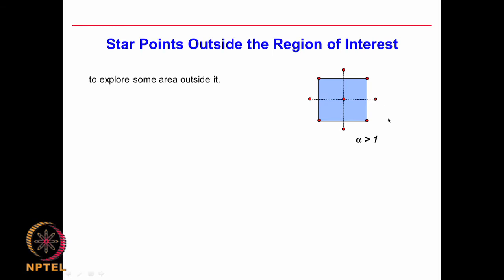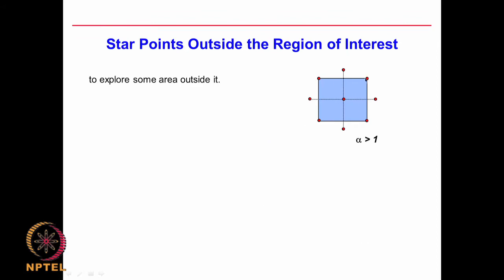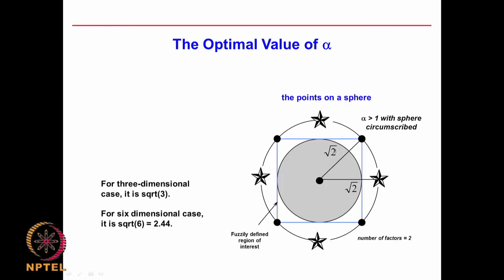The question is how do I decide on alpha? It has been found that alpha equal to the square root of the number of parameters is most optimum. That means if it is a 2^2 design then alpha should be 1.414. So if your square has a side of 1 then alpha should be 1.414. The experiments go plus 1.414, plus 1, 0, minus 1, minus 1.414 for each parameter. Generally it has been found square root of the number of parameters gives the best optimum results. So for a 3-parameter problem it is sqrt(3) = 1.732; for 6 dimensions it is sqrt(6) = 2.44.